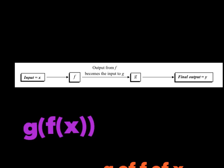You're basically going to put something in to a function f, you're going to get an answer out called the output, and you're going to take that output and put it into g, and then you'll have your final answer. So basically you're just taking something and substituting it into a function, then taking that answer and substituting it into something else.